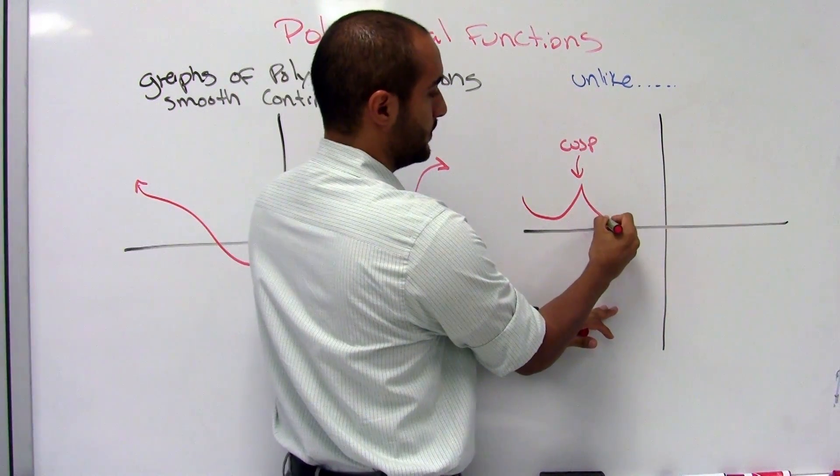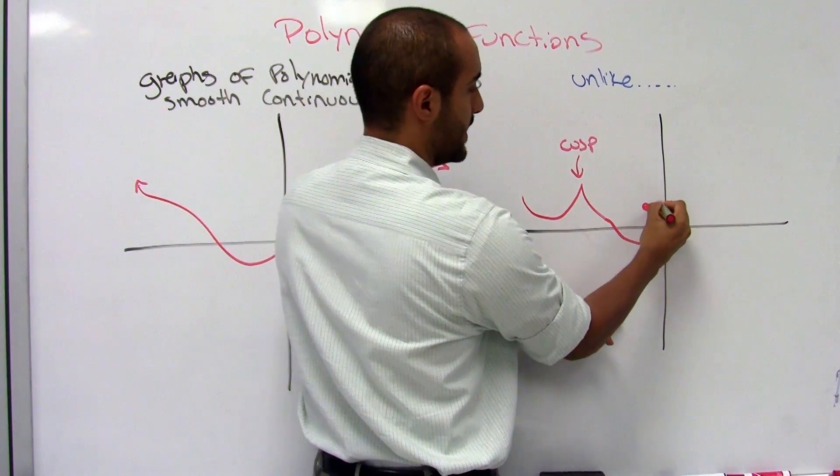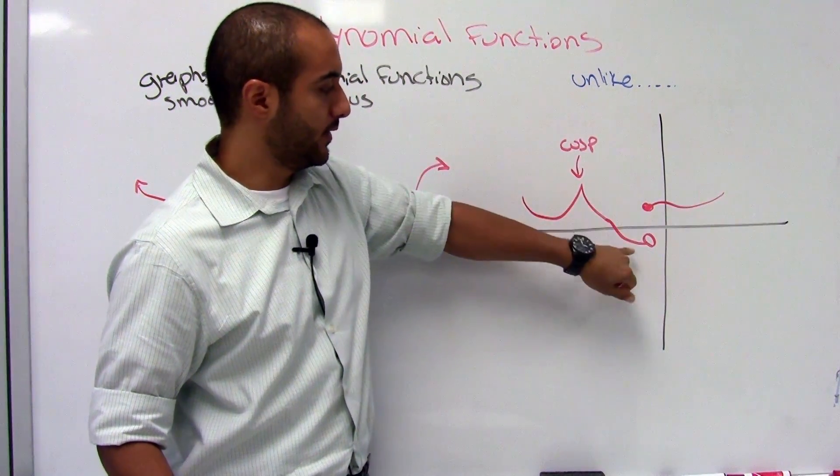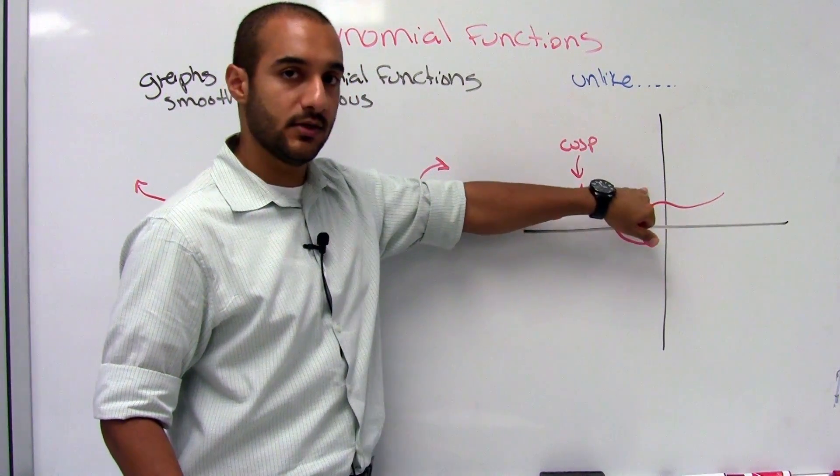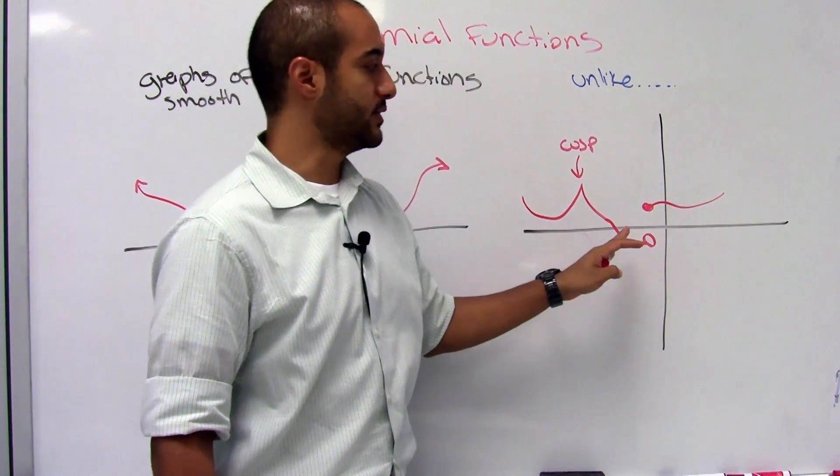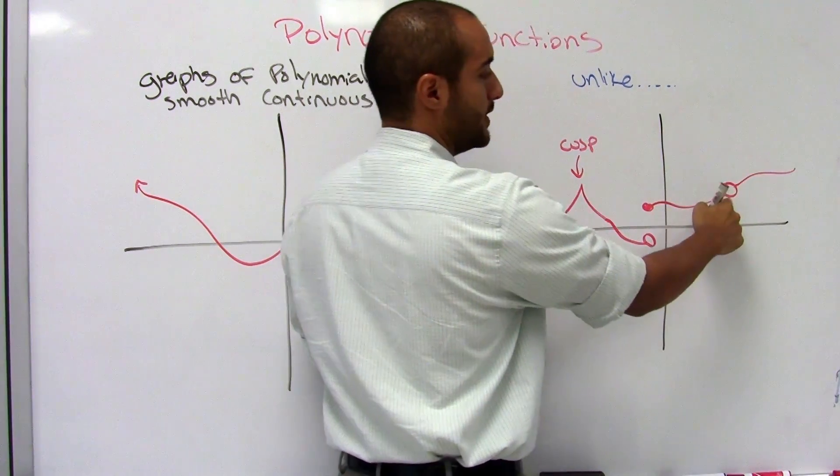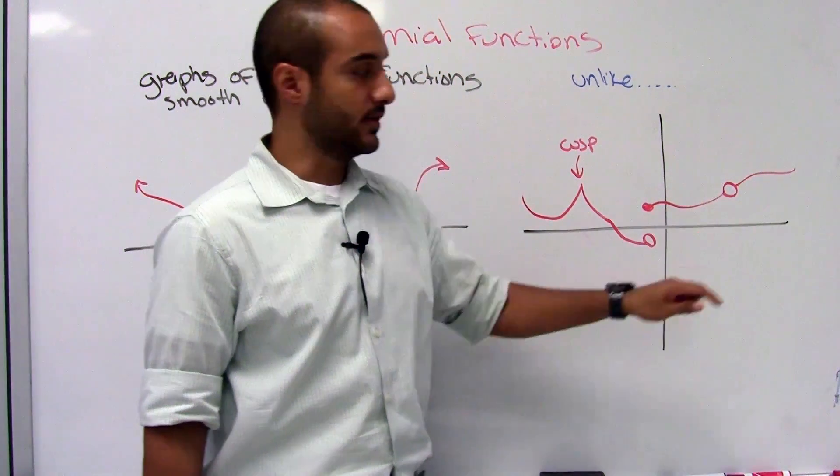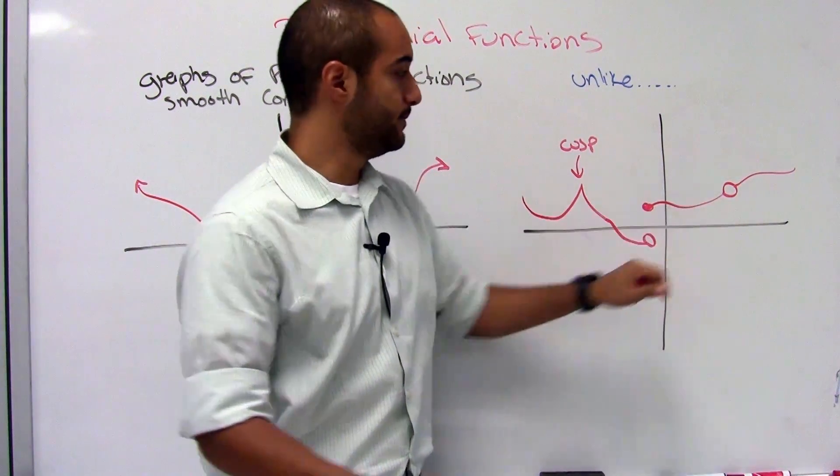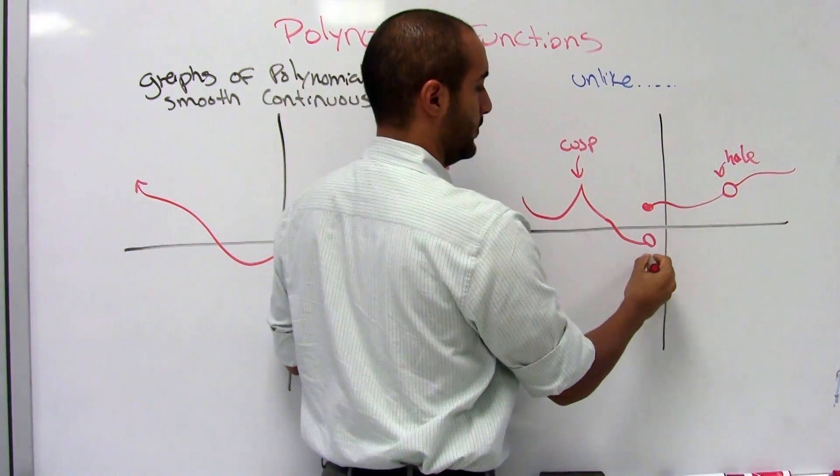You can also have gaps. Notice that here, it jumped from here to here. It didn't continue. So this is considered not from a polynomial function. Or likewise, if you have gaps. So let's say this number is not part of an answer. That makes it, that will create a hole. And it would not be from a polynomial function.